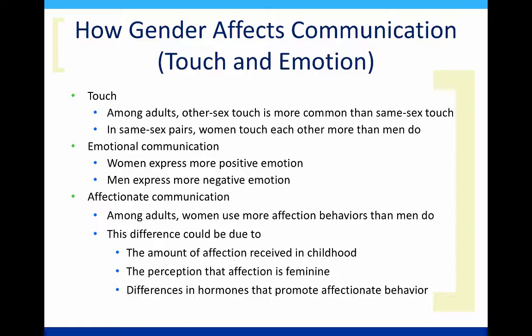Women also exhibit more affection behaviors like hugging and kissing than men do. Again, this might be due to societal expectations, but it also is learned behavior as women tend to receive more affectionate behavior in childhood. Some researchers also think that differences in male and female hormones could promote affectionate behavior among women and stifle it among men. As we've seen in this chapter, issues of culture and gender often play a big part in the way we communicate with others, particularly those whose culture or gender differs from ours. Now you're ready to complete the LearnSmart assignment for chapter two.